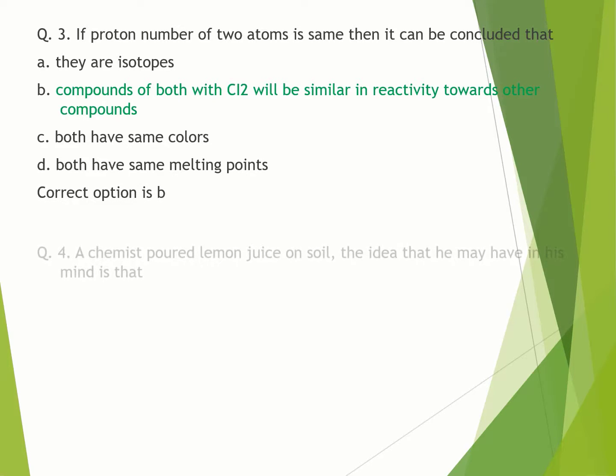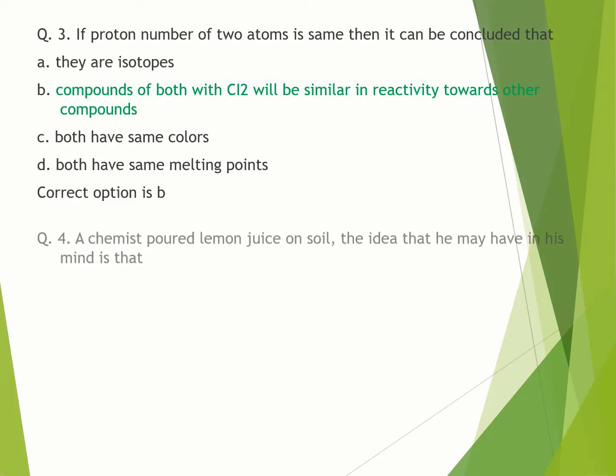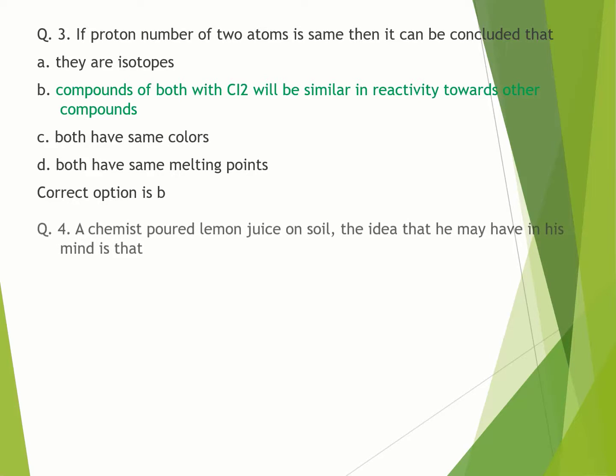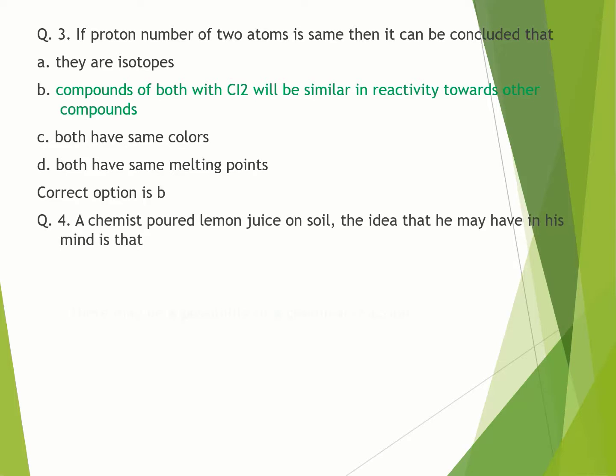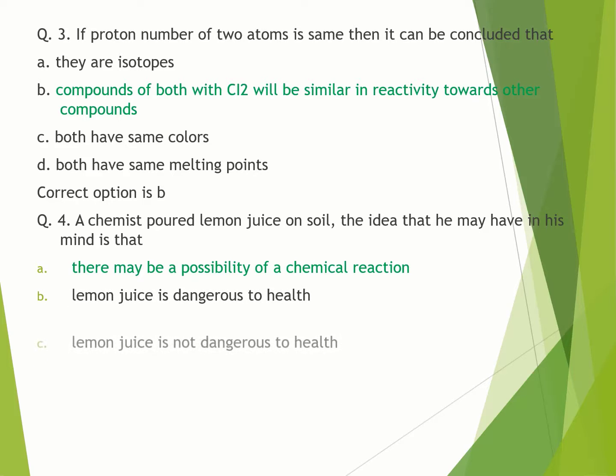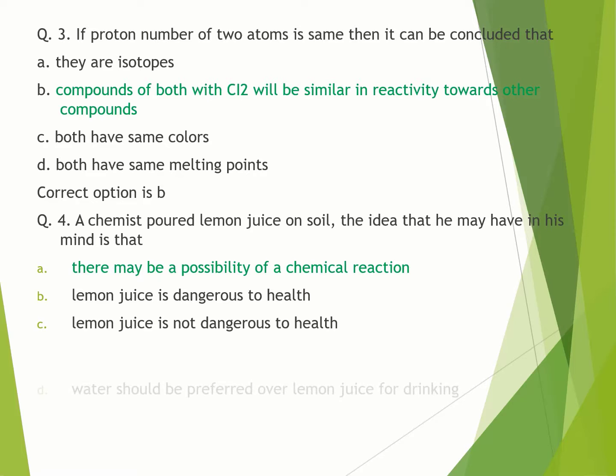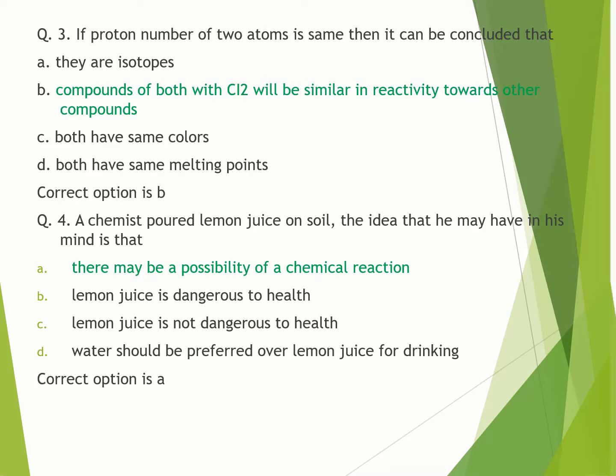Question number 4. A chemist poured lemon juice on soil. The idea that he may have in his mind is that: A. There may be a possibility of a chemical reaction. B. Lemon juice is dangerous to health. C. Lemon juice is not dangerous to health. D. Water should be preferred over lemon juice for drinking. Correct option is A.